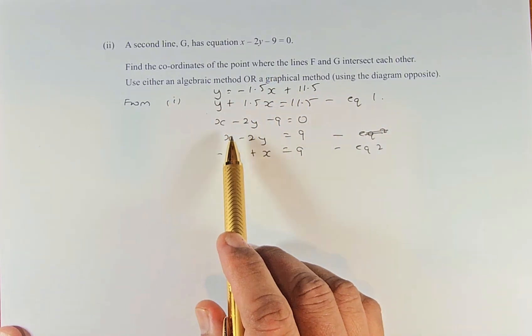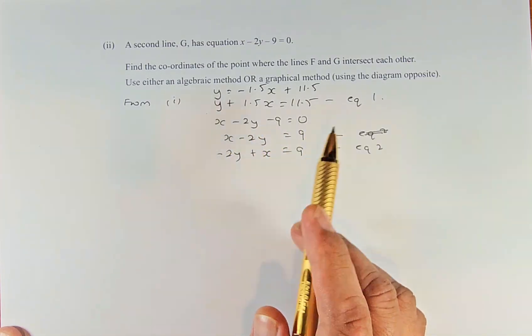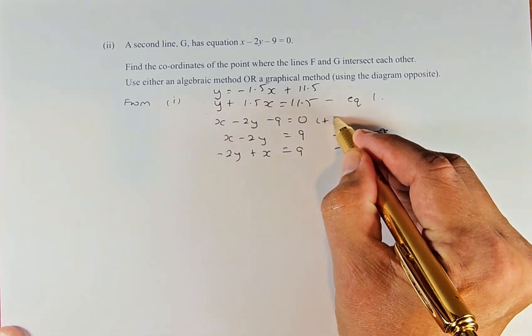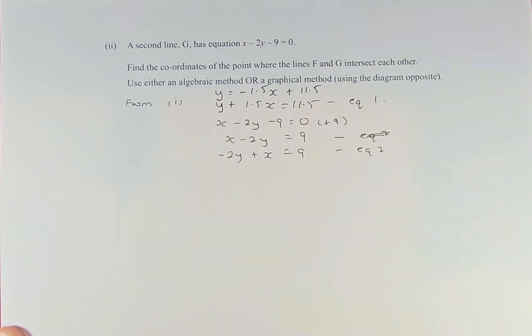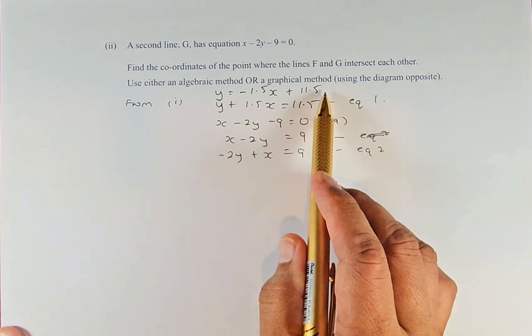A second line G has the equation x - 2y - 9 = 0, or x - 2y = 9 by adding 9 to both sides. This is equation 2. The first equation is y = -1.5x + 11.5.